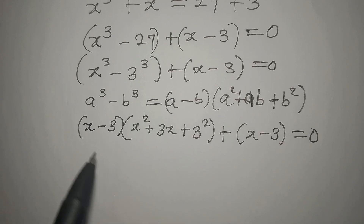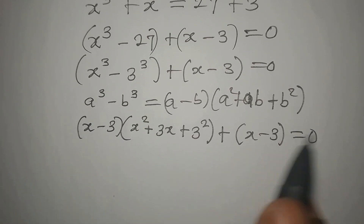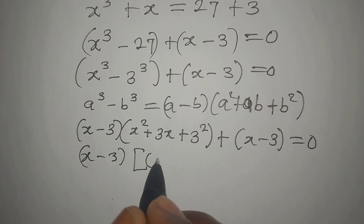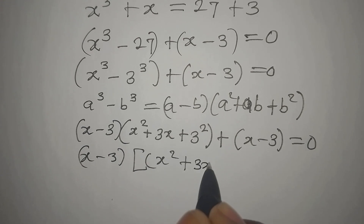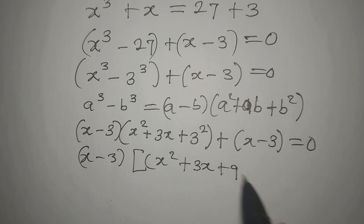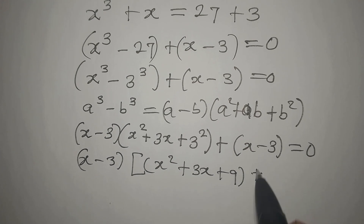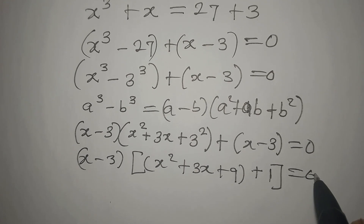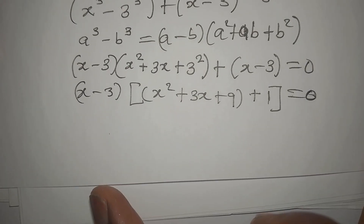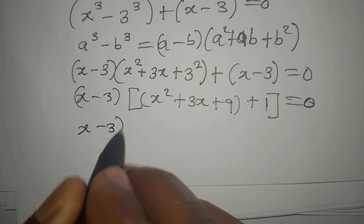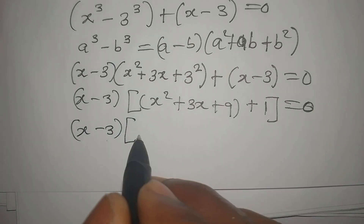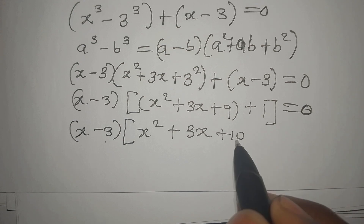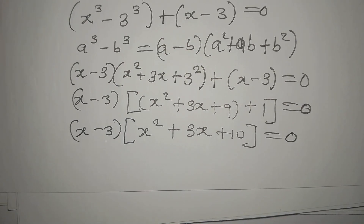From here, we're going to pick out the common factor. The common factor is x minus 3. Then inside we're going to have x squared plus 3x plus 9, because 3 squared is 9. The whole of x minus 3 is factored out, so we have plus 1 over there, and everything equals 0. So we have x minus 3 times x squared plus 3x plus 10, because 9 plus 1 is 10, and everything is equal to 0.